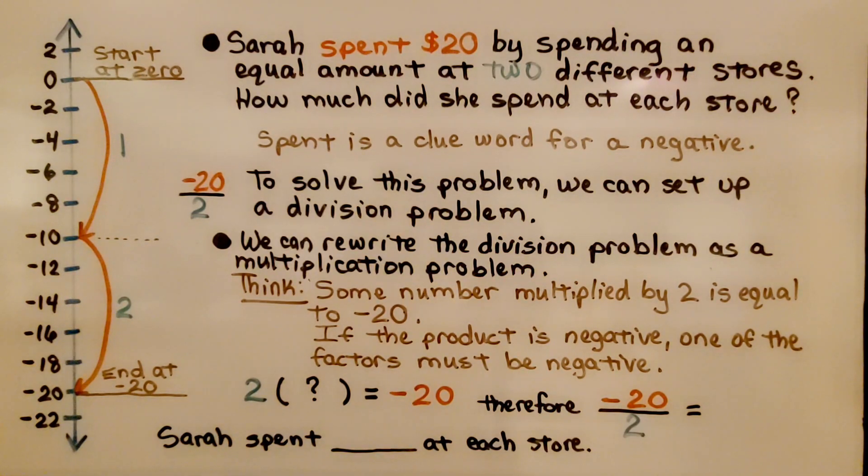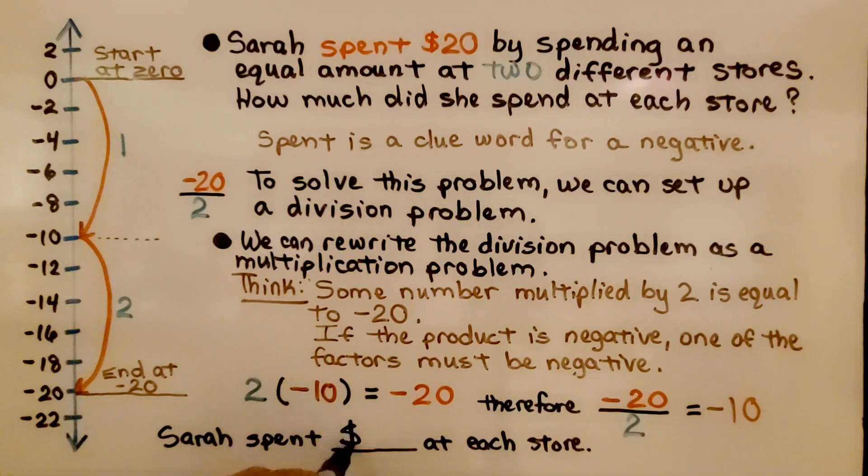We know 20 divided by 2 is 10 and 2 times 10 is 20. This must be a negative 10. Negative 20 divided by 2 is negative 10. This means Sarah spent $10 at each store.